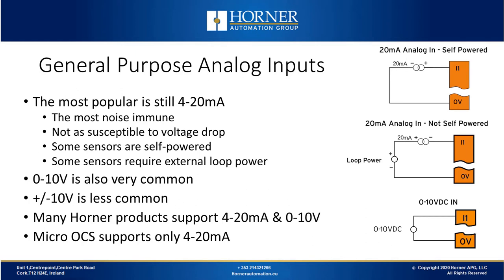From a general purpose standpoint, 4-20mA is still the most popular. It's the most noise immune because current is less susceptible to noise than voltages, and it's not as susceptible to voltage drop either. Some 4-20mA transmitters or sensors are self-powered; others require external loop power — we support both with our products. 0-10V is also very common, and plus or minus 10V is also supported in some cases. Most Horner products support both general purpose signals, 4-20 and 0-10V. The Micro OCS series supports only 4-20mA as it's the most popular.